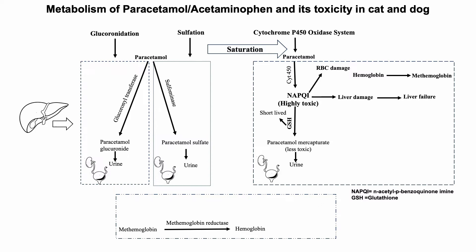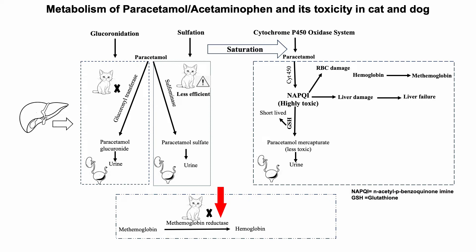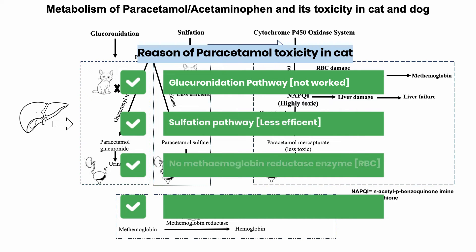Why does toxicity occur specifically in cats? First, cats have a deficiency in glucuronyl transferase enzyme, so the glucuronidation pathway is non-functional. Primary metabolism therefore occurs via the sulfation pathway, which is less efficient. Upon saturation of this pathway, large amounts of NAPQI are produced by the CYP450 system. Second, cats have a deficiency in methemoglobin reductase enzyme in erythrocytes, so RBCs cannot convert methemoglobin back to hemoglobin. Third, cat RBCs have more sulfhydryl groups compared to dogs and humans, making them more prone to denaturation and precipitation as Heinz bodies due to increased osmotic fragility, resulting in hemolytic anemia and jaundice.